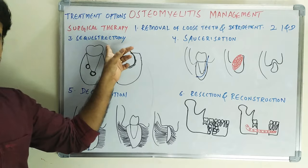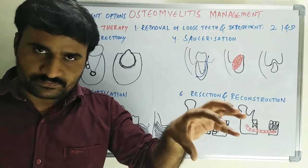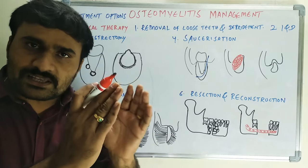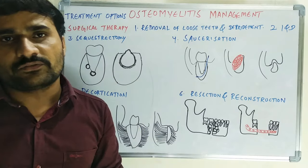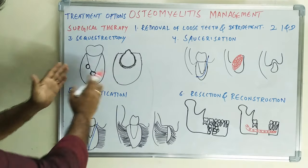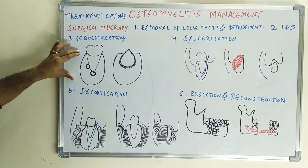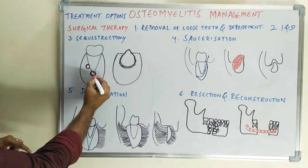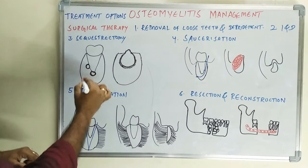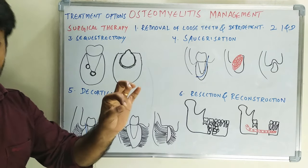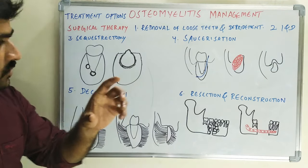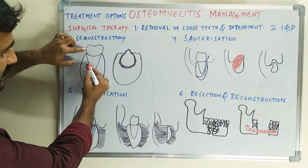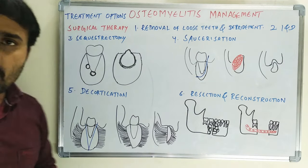In sequestrectomy, when the sequestrum — the dead bone — is well localized within the central lesion of the bone, as seen in the diagram of the mandible where the black circles represent sequestrum, you can easily remove these sequestra after removing the teeth.